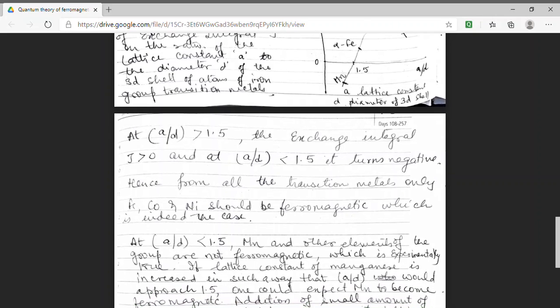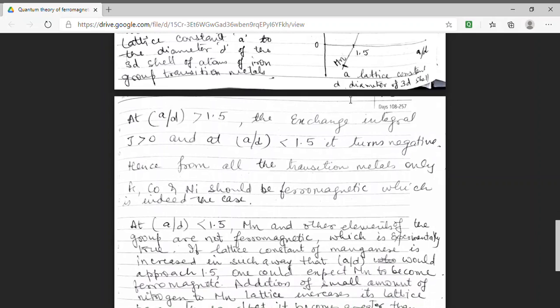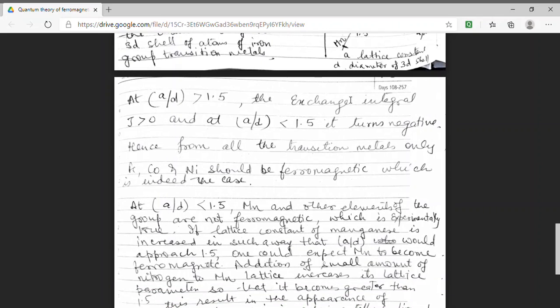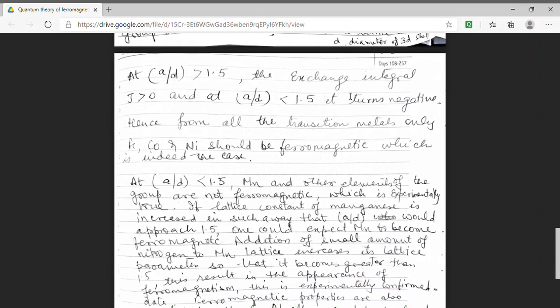Students, yes, this happens. On addition of small amount of nitrogen to Manganese, it has been found that its lattice constant increases. So, A by D factor increases and it becomes greater than 1.5. Hence, there will be an appearance of ferromagnetic behavior by addition of nitrogen in Manganese.